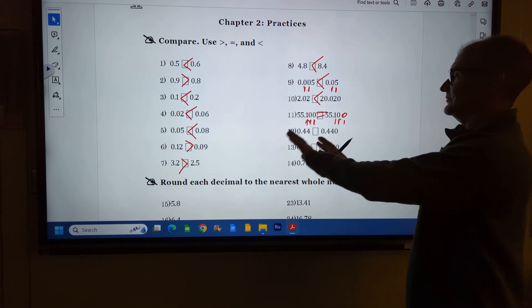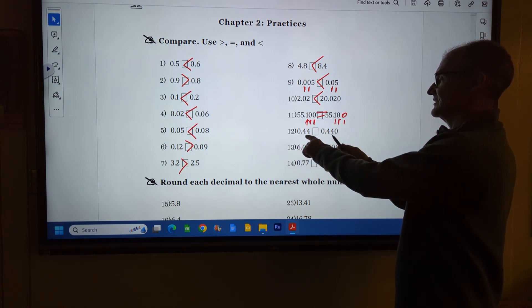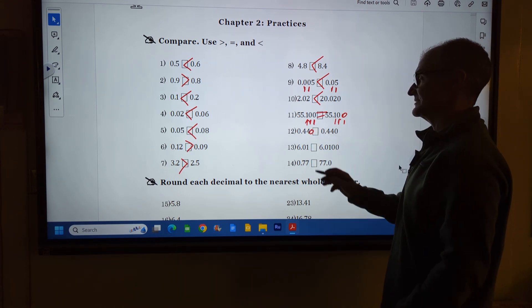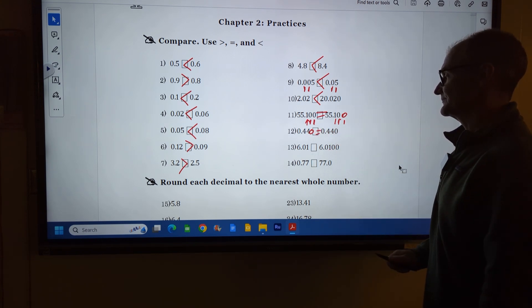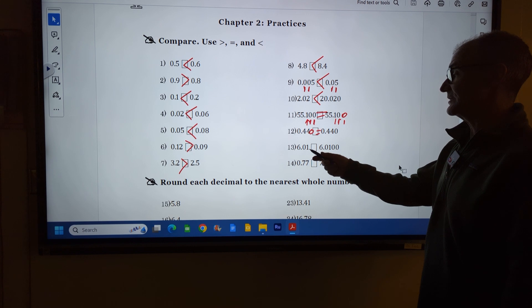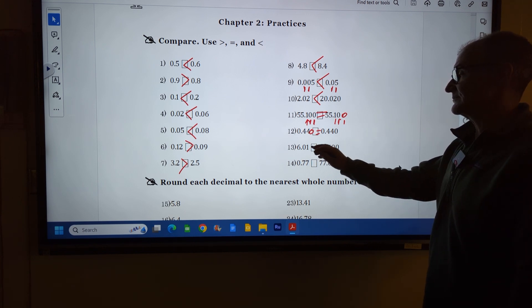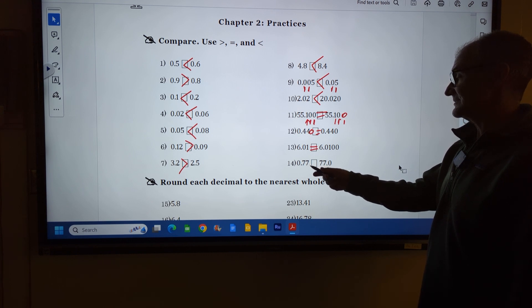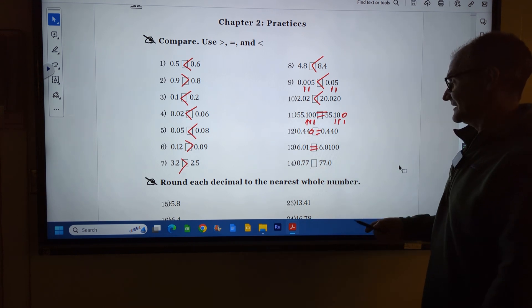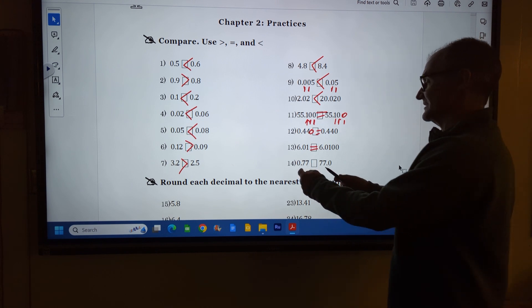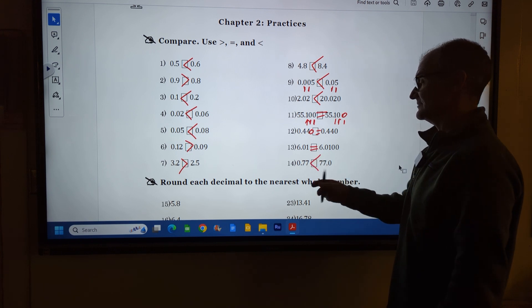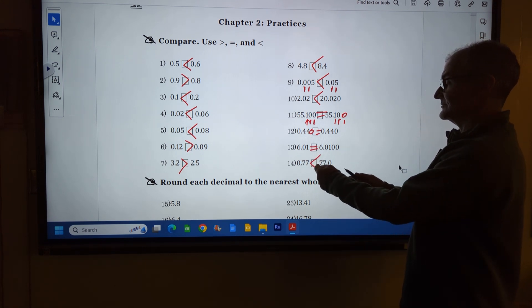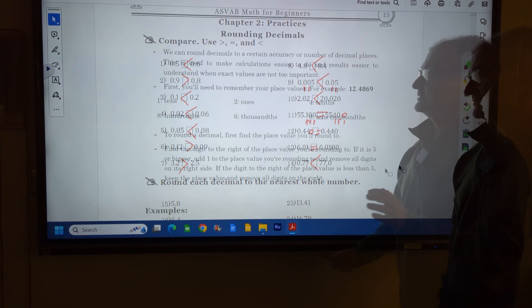Right here, no whole number. If I go to the right of the decimal, 4s are the same, 4s are the same. There's no 0 here, which means it has to be a 0. So these two numbers are equal. 6.01, 6.01, equal. .77. This is a tricky one. I'm looking at the whole numbers first. Is 0 greater than 77? No, 77 is greater than 0.